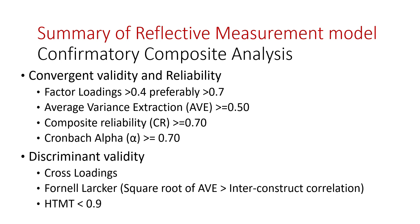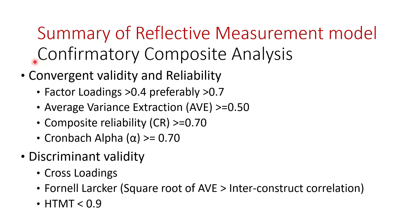We cannot delete all indicators or so many that the content validity of our construct changes — we must retain enough indicators that the construct reflects what it is meant to measure. This process is called confirmatory composite analysis, which is different from confirmatory factor analysis: here we work with composites assuming no correlation between variables and a linear combination based on reflective weights calculated by the PLS method, whereas CFA correlates variables and finds the best-fitting model. We are looking at individual constructs and their validities and reliabilities. In the next video we will look at the structural model.